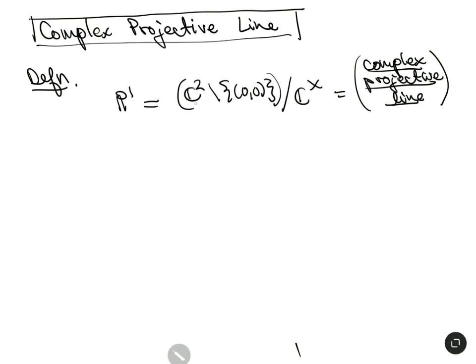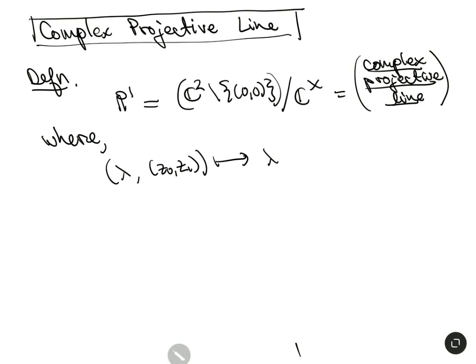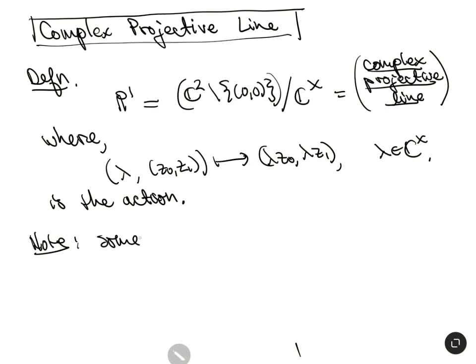It's a quotient by a group action — something we discussed in class. The group action multiplies each coordinate by λ ∈ ℂ*: λ · (z₀, z₁) = (λz₀, λz₁). So essentially we take pairs of complex numbers and mod out by this action. Some people call this ℂP¹ or P¹(ℂ) — those are two other notations you might see.